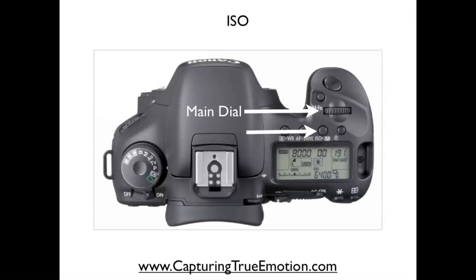To locate your ISO, it's very simple — just push your ISO button, it says ISO, push the button and turn your main dial. You'll see your ISO in your monitor right here.